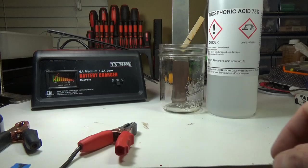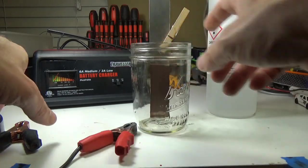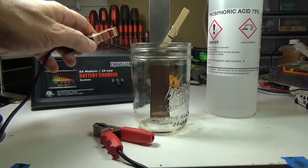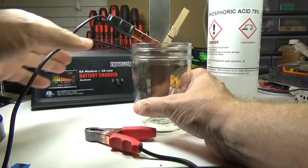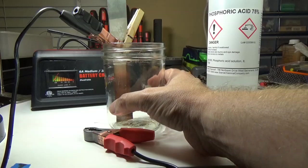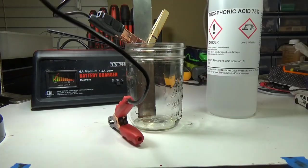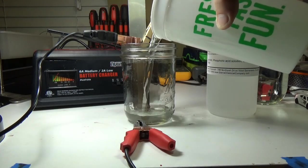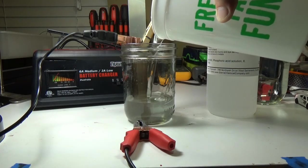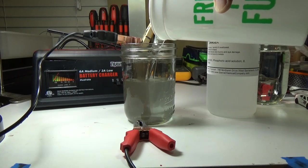What you'll need to do is take your negative lead—and that's the black one here—clamp it onto the stainless steel bar. The red one will be used to clamp onto the car. And all we need to do now is pour in our phosphoric acid and plug in our battery charger.